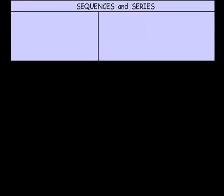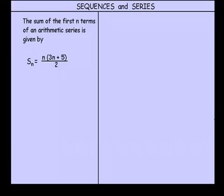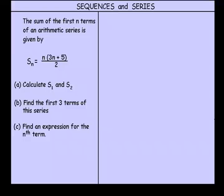Our final question for this lesson. Again, sequences and series. The sum of the first n terms of an arithmetic series is given by this. S of n equals n outside of 3n plus 5 all over 2. We're asked to calculate S of 1 and S of 2. Part B. Find the first three terms of the series. And finally, find an expression for the nth term.